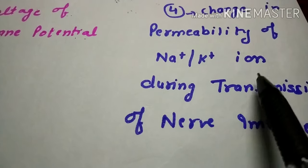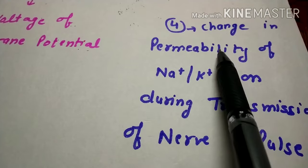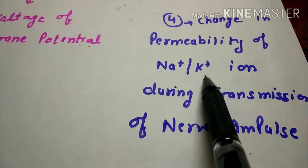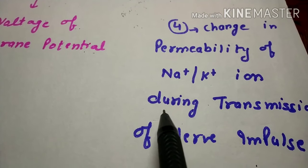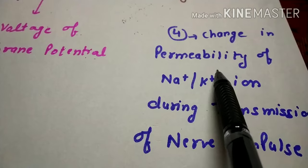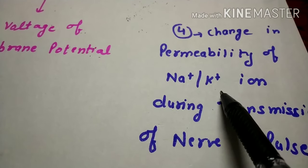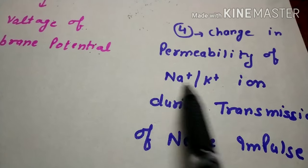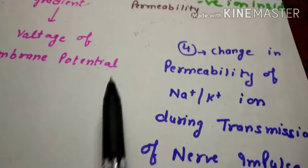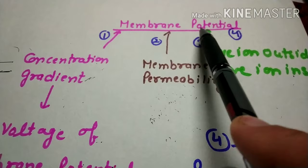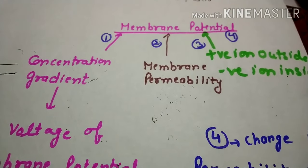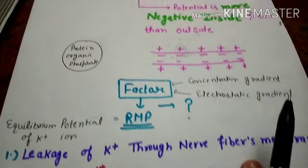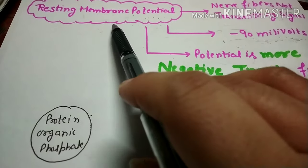The fourth factor which contributes is the change in permeability. This change in permeability occurs when a nerve impulse starts — at that time, the permeability of sodium and potassium ions can be changed. So these are the important factors which contribute to this membrane potential. Now we have to see how the resting membrane potential actually comes about.